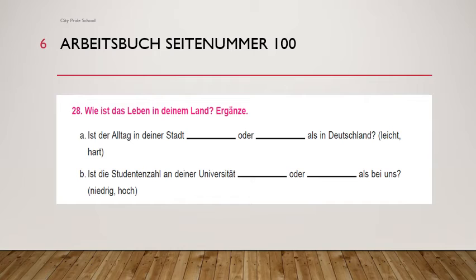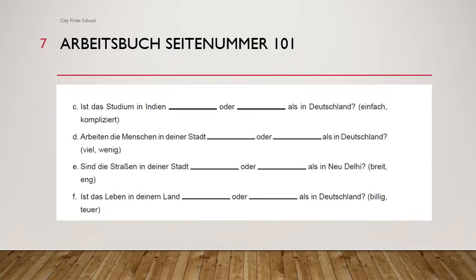I hope those two are clear. On the next page, page 101, the remaining sentences are there. The same way, 'als' is written everywhere, so you just put the comparative form of the adjectives. The meanings: einfach is simple, kompliziert is complicated, viel means a lot, wenig means less, breit is broad, eng means narrow, billig means cheap, and teuer means expensive. Discuss the answers in our live class.